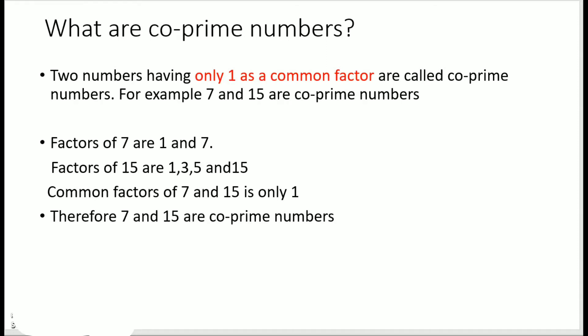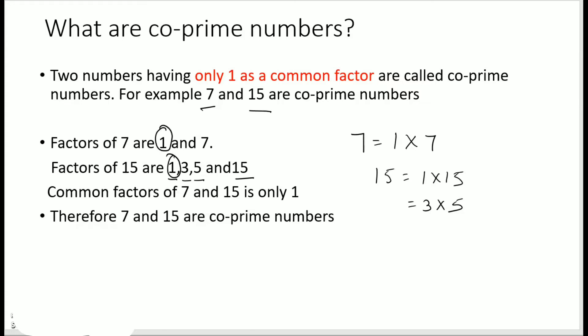Two numbers having only one as a common factor are called co-prime numbers. For example, 7 and 15 are co-prime numbers. The factors of 7 are 1 and 7. The factors of 15 are 1, 3, 5, and 15. If you find the common factors of 7 and 15, that is only 1. Therefore, 7 and 15 are co-prime numbers.